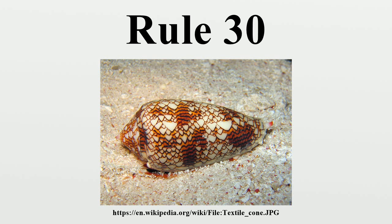This rule is of particular interest because it produces complex, seemingly random patterns from simple, well-defined rules. Because of this, Wolfram believes that Rule 30, and cellular automata in general, are the key to understanding how simple rules produce complex structures and behavior in nature. For instance, a pattern resembling Rule 30 appears on the shell of the widespread cone snail species Conus textile. Rule 30 has also been used as a random number generator in Mathematica, and has also been proposed as a possible stream cipher for use in cryptography.